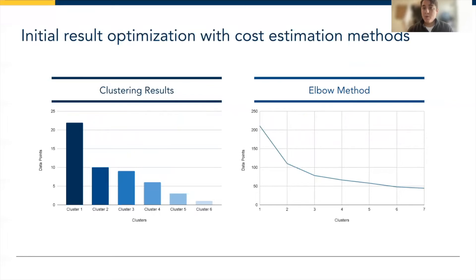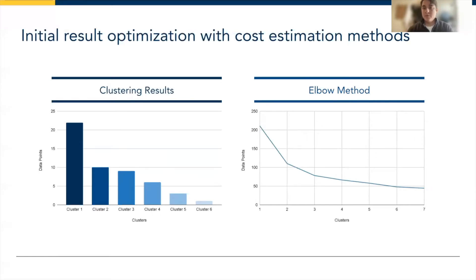Initially I used a k-prototype of six clusters, and as you can see it classified each state including the District of Columbia — that's why there are 51. We also incorporated the elbow method, a cost estimation approach for determining the optimal number of clusters. Based on that analysis, you want to find the point where the line starts moving almost parallel to the horizontal axis, and you can see it's three, with that little divot there.